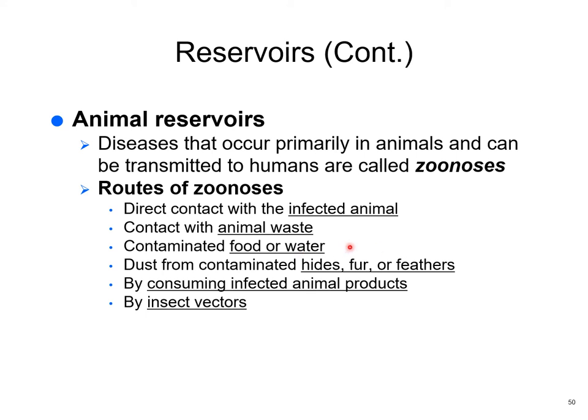Contaminated food or water: in some places there is simply no clean water. Contaminated food includes situations where someone coughs over food, or where sneeze guards at food bars exist precisely to prevent people from sneezing germs onto food. Contaminated hides, furs, or feathers are also sources.